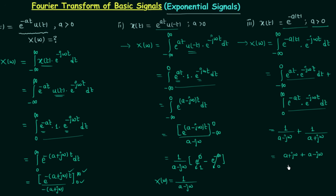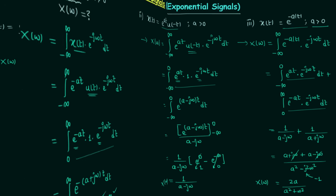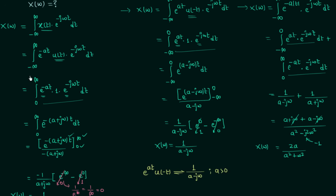So we have 1 over (a plus j omega) plus 1 over (a minus j omega), which equals (a plus j omega plus a minus j omega) over (a squared minus j squared omega squared). The j omega and minus j omega terms cancel, giving 2a in the numerator. In the denominator, since j squared equals minus 1, we have a squared plus omega squared. So the Fourier transform equals 2a over (a squared plus omega squared). When the time domain signal is e power minus a|t|, the Fourier transform is 2a divided by (a squared plus omega squared), where a is positive.